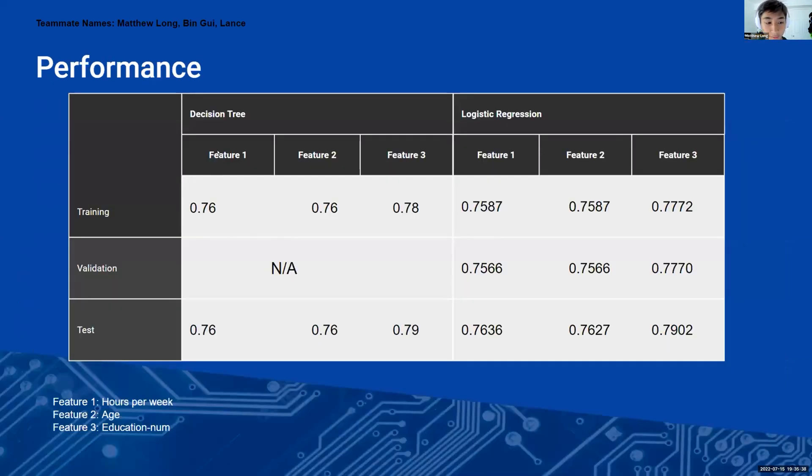So for performance, the features are listed here. So in our training set, the decision tree, feature one got 0.76 accuracy, feature two got 0.76 as well, and feature three got 0.78. For the decision tree, we didn't use the validation set, we just used the training and test set. And feature one was 0.76 as well, feature two was also 0.76, and feature three was 0.79.